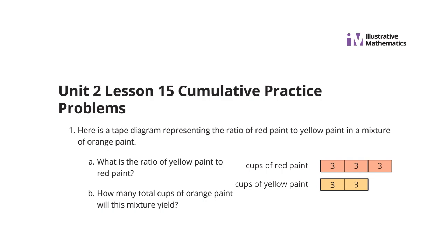Number 1: here's a tape diagram representing the ratio of red paint to yellow paint in a mixture of orange paint. A: what is the ratio of yellow paint to red paint? Well, careful — it says yellow to red. We have two parts of yellow and three parts of red.